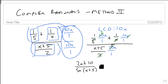So now all we have to do is factor our numerator, pull out a 2, leaves an x plus 5. And when we divide out our x plus 5s, we're left with 2 over 5x.